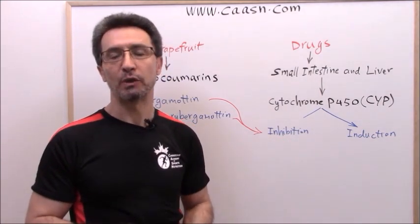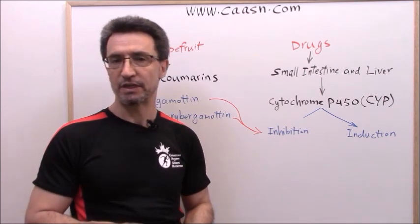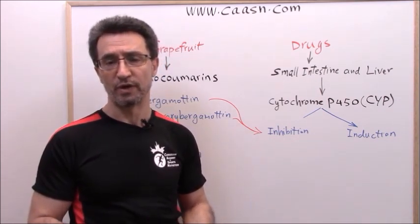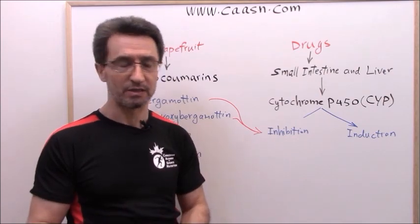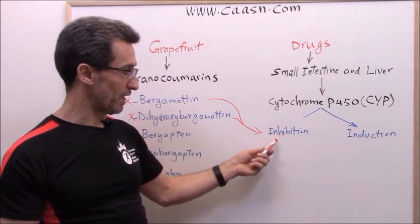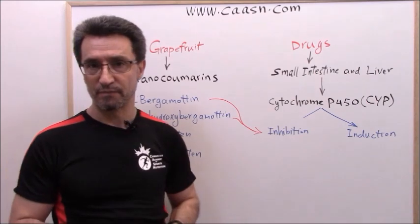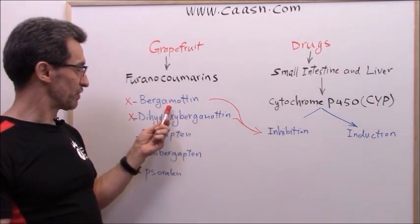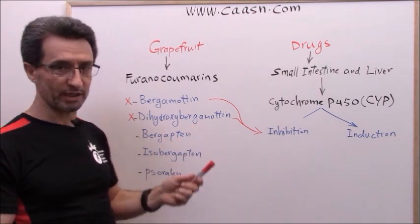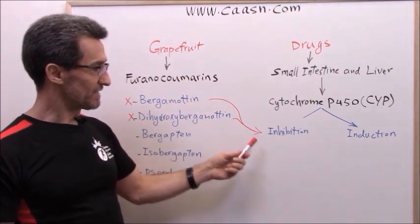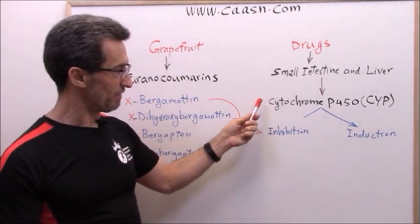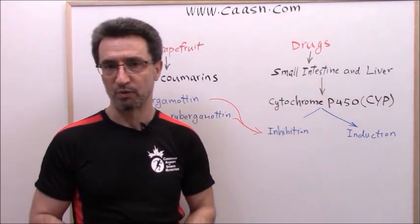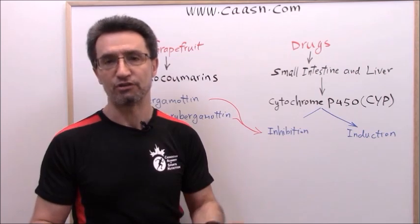What else causes enzyme inhibition? Birth control pills. There's also a famous medication, tagamet or cimetidine, prescribed for stomach acidity and stomach ulcers — it causes enzyme inhibition. So the two furanocoumarins, bergamotin and dehydroxybergamotin found in grapefruit, decrease the activity of cytochrome P450, which is responsible for metabolizing many medications.